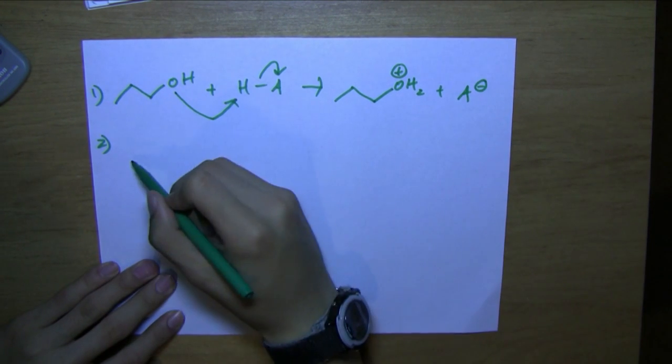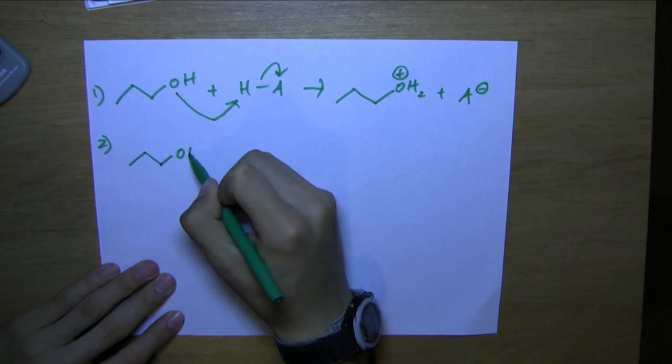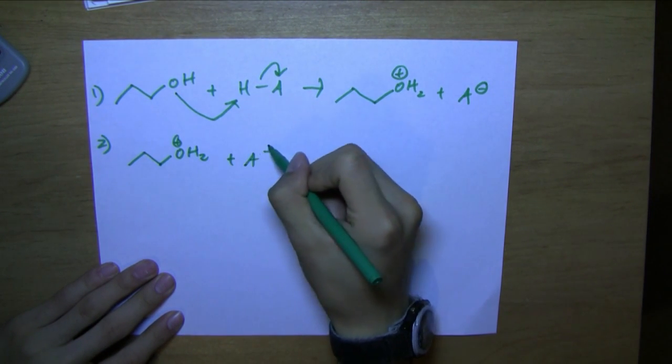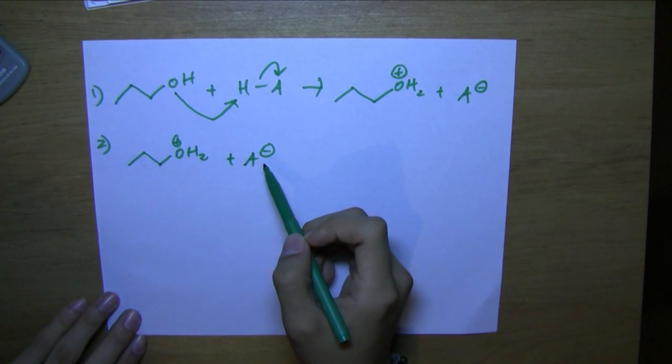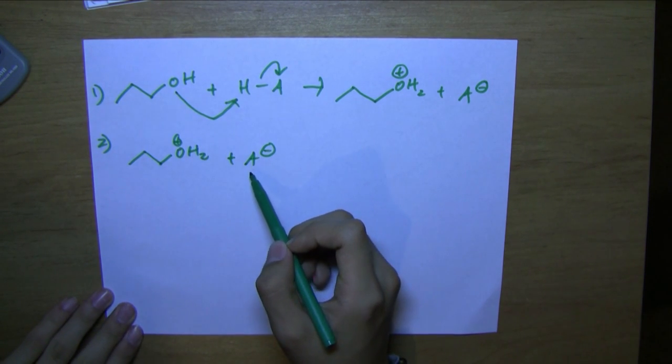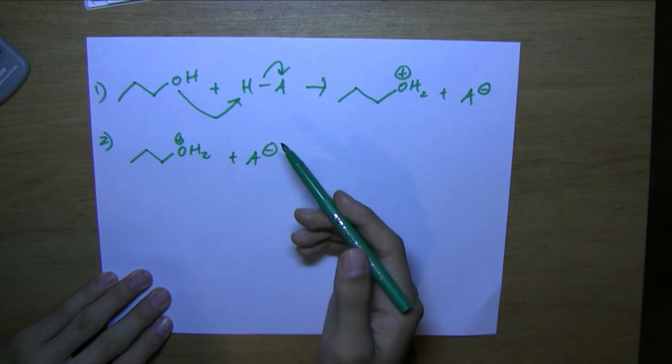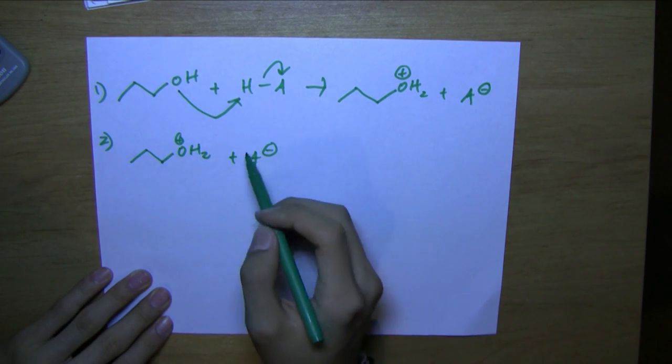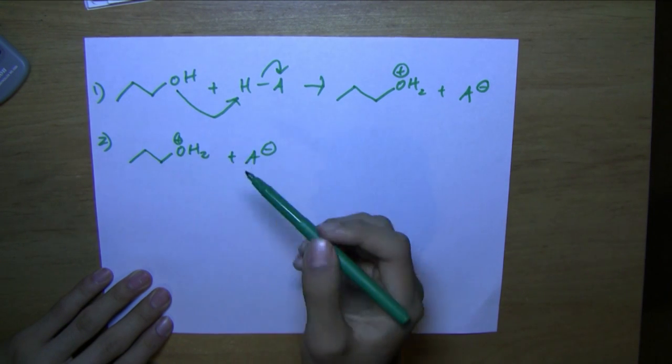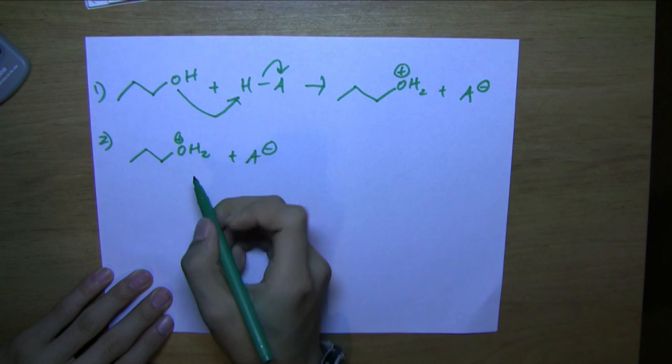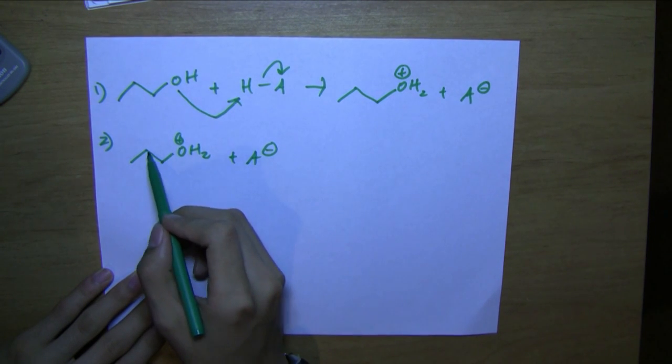So what is going to happen is this conjugate base basically just comes back and proceeds through step three of the E1 reaction, where it would donate an electron to a beta carbon right at step two. So since there's only one beta carbon, alpha, beta, we're going to take this hydrogen.